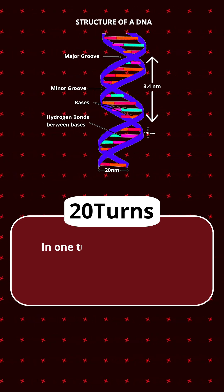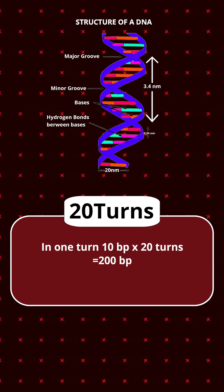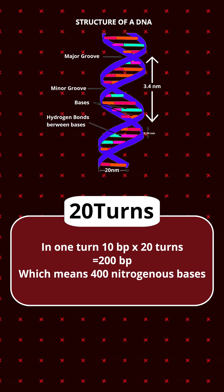One turn of DNA consists of 10 base pairs. 10 into 20 gives a total of 200 base pairs, which means 400 nitrogenous bases.